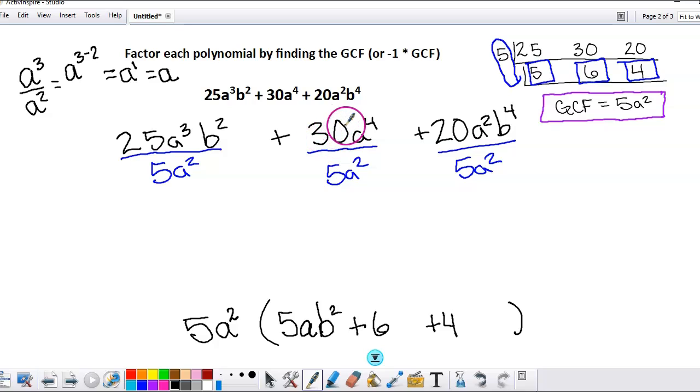All right, 30 divided by 5 is 6. a⁴ divided by a² we do the same thing: top power minus bottom power. All right, so we have 6a². There is no B in there, so we don't have to worry about that.